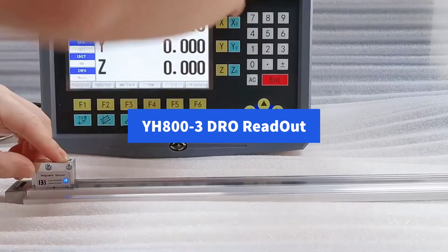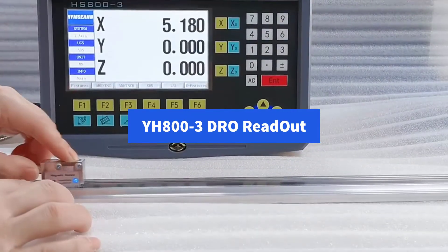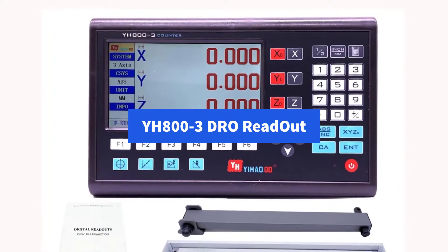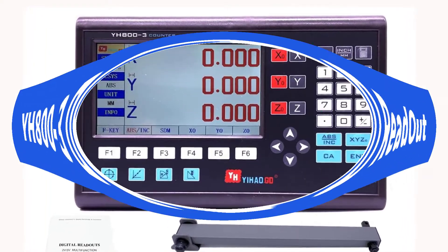Made with YH800 3DRAW multifunctional 3-axis digital readout, it can adapt the different needs of machining by modifying the system parameters.